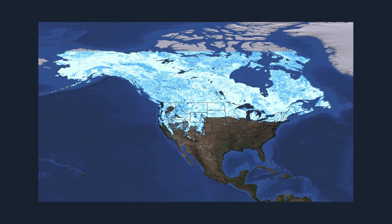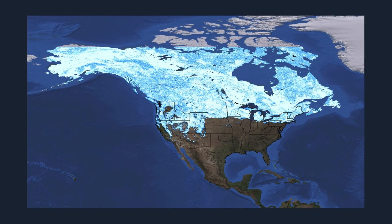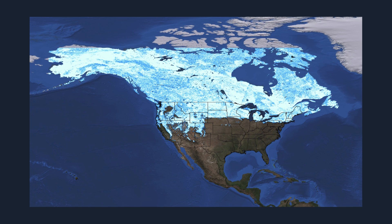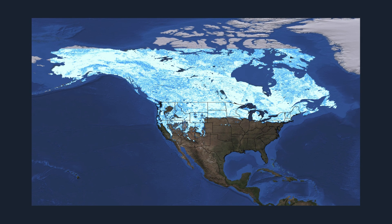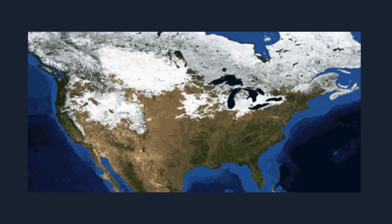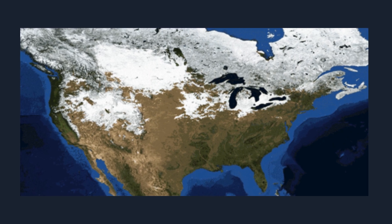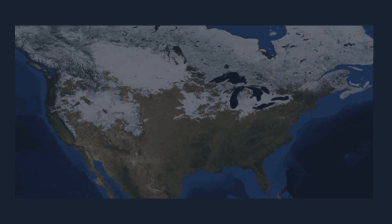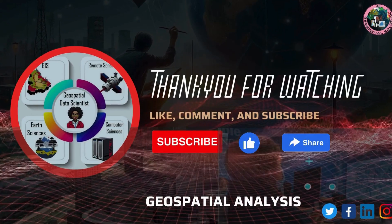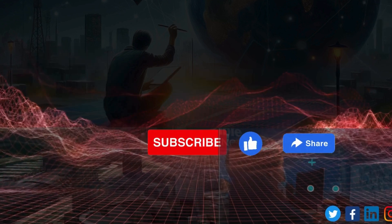And there you have it — the top eight remote sensing indices you should know. Whether you're working with vegetation, water bodies, urban areas, or snow cover, these indices provide powerful insights for your analysis. If you found this video helpful, don't forget to like, subscribe, and leave your thoughts in the comments. Which index do you use the most in your work? Let me know below, and I'll see you in the next video.